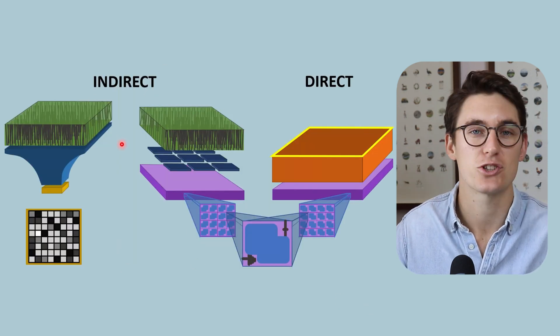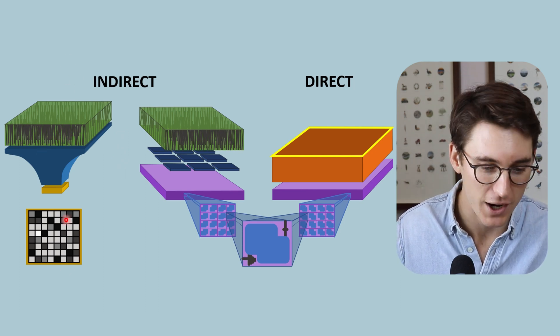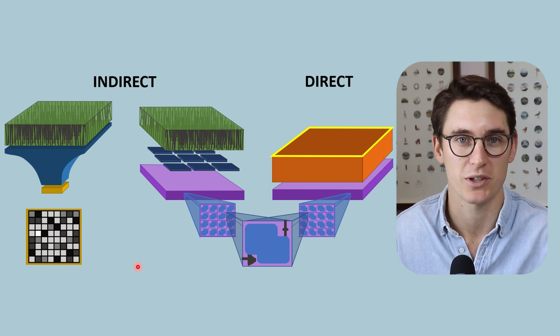Now our CCD system falls under the indirect digital radiography systems because X-rays are required to be converted into light prior to an electronic image being created.